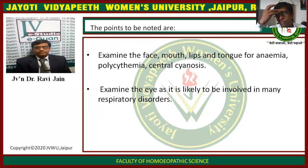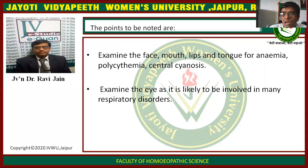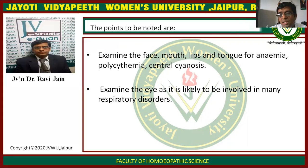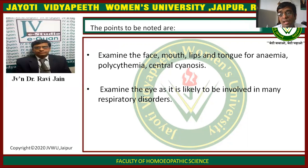Then start examining from head to toe. First, examine the face, the mouth, the lips, and the tongue for anemia. Look into the eyes for any kind of findings — check the conjunctiva for pallor. Check the mouth and lips, ask the patient to protrude the tongue, and look for any sign of anemia, cyanosis, polycythemia, or central cyanosis. Examine the eyes as they are likely to be involved in many respiratory disorders.